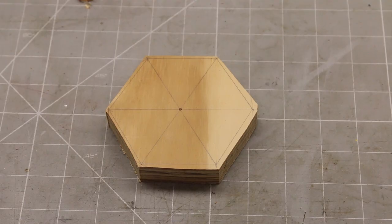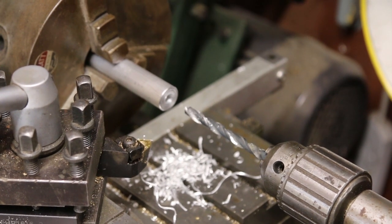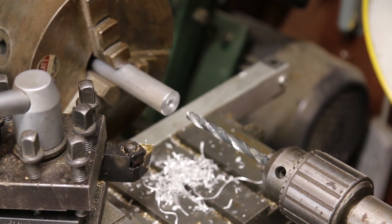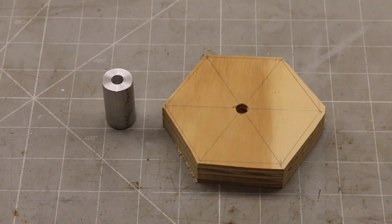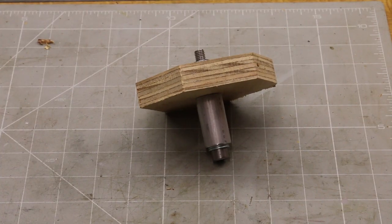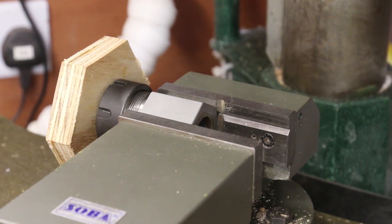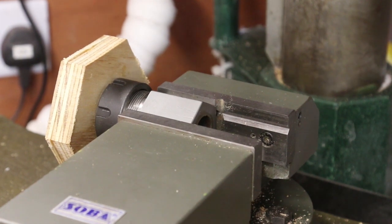This was then cut out roughly on the bandsaw. I then drilled an 8 millimeter hole through some 20 millimeter aluminum bar. 20 millimeter because that's the largest ER32 collet I have. I then parted it off. With the addition of an 8 millimeter hole through the wood I could bolt the assembly together. The jig was then fitted in a hex collet.